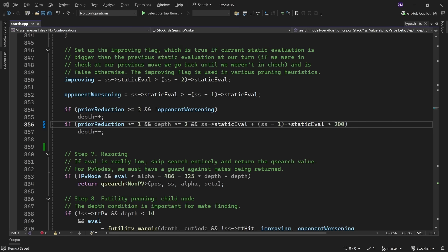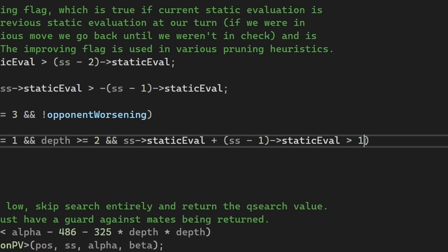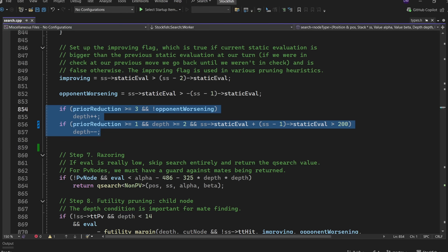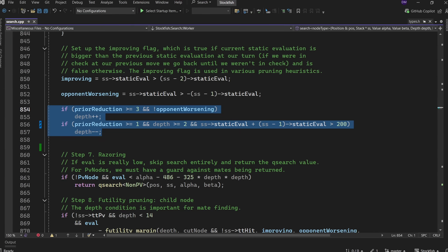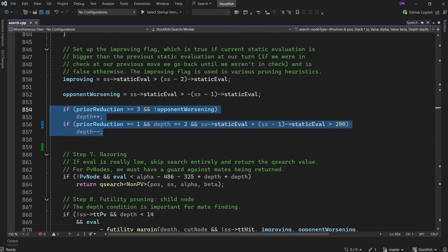We did have a small tune that changed the evaluation drop margin to three-fourths of a pawn from a full pawn, but other than that, here are the four lines of code that represent my newest contribution to the world's strongest chess engine.